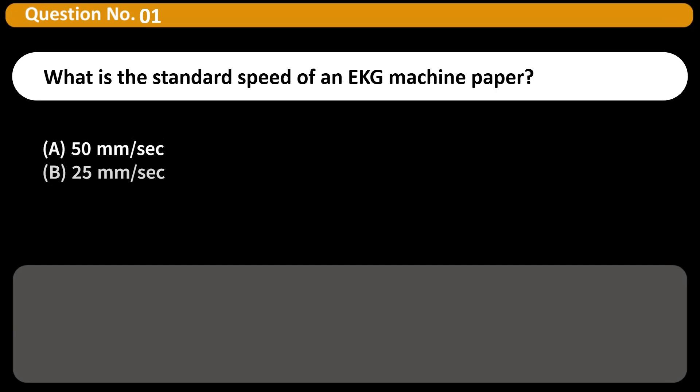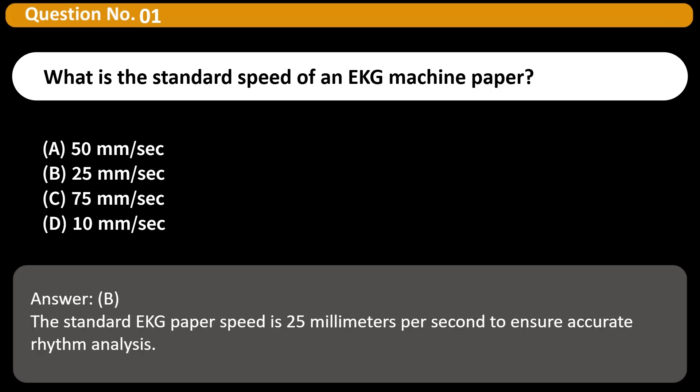What is the standard speed of an EKG machine paper? A. 50 mm per second B. 25 mm per second C. 75 mm per second D. 10 mm per second Answer B. The standard EKG paper speed is 25 mm per second to ensure accurate rhythm analysis.